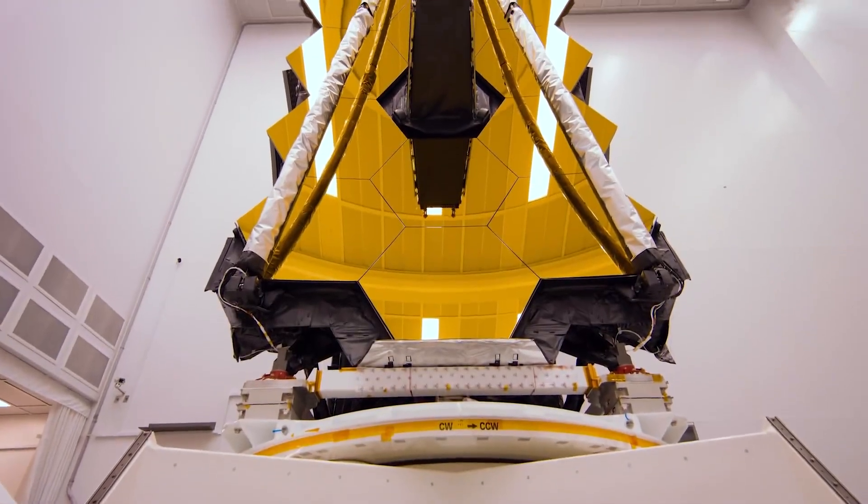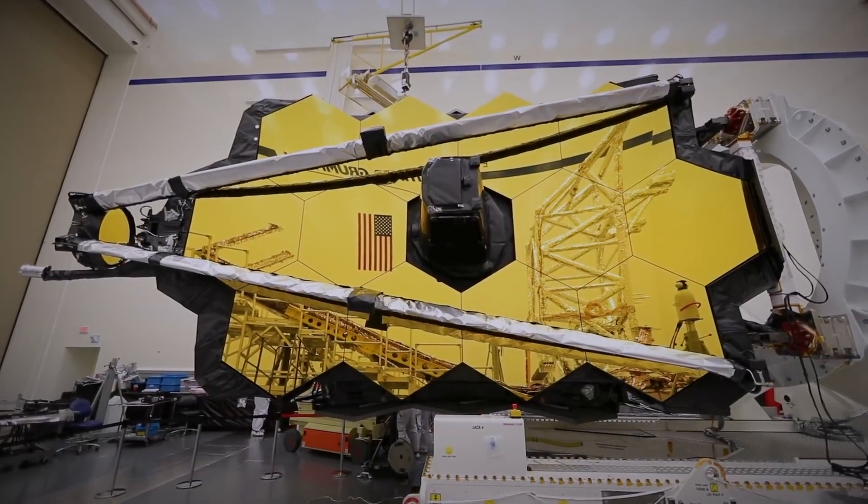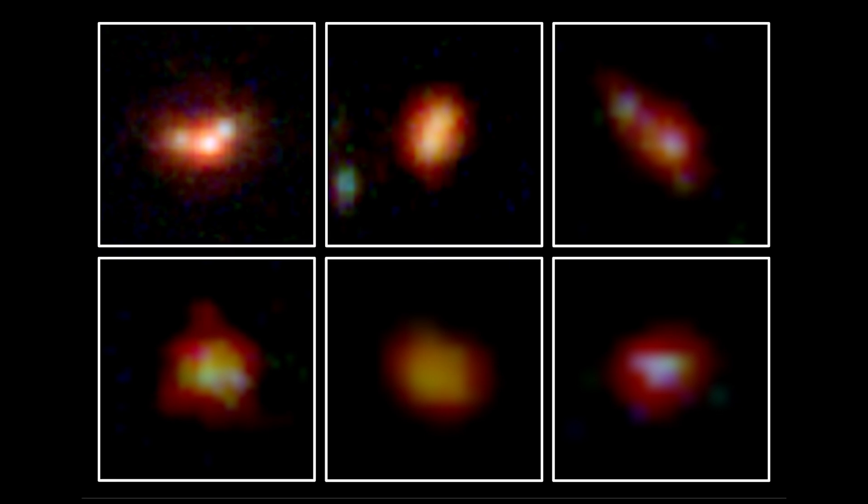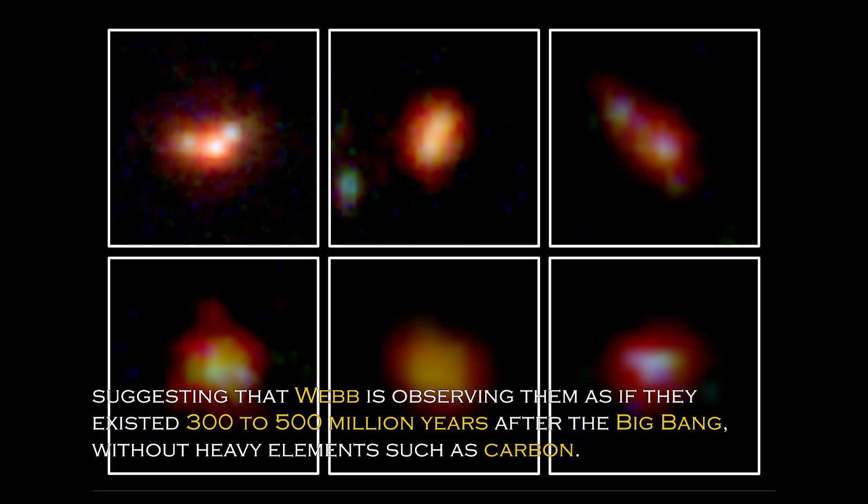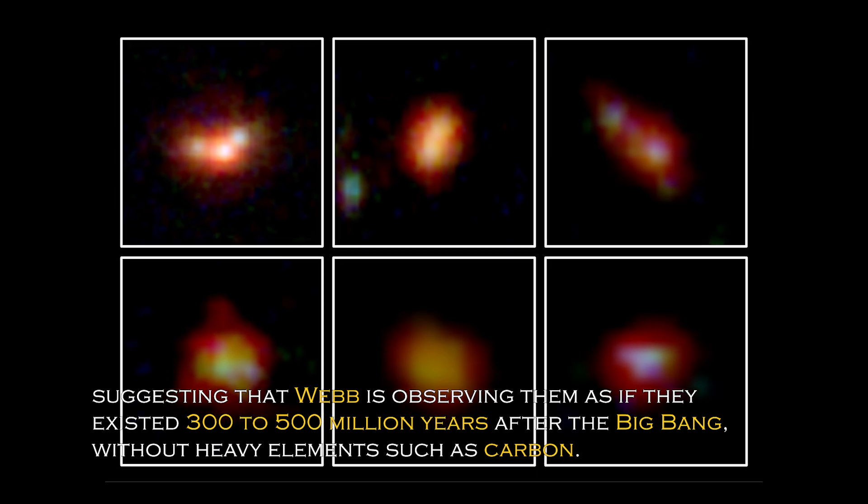Data obtained from Webb's spectrometer and near-infrared camera have revealed that four of the six primordial galaxies have extreme redshifts, suggesting that Webb is observing them as if they existed 300 to 500 million years after the Big Bang, without heavy elements such as carbon.